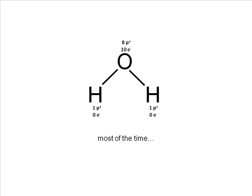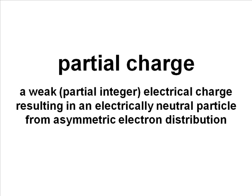These aren't permanent charges, so I say slightly. Oxygen has those electrons most of the time, but there are moments when they are around hydrogen, and in those moments oxygen doesn't have eight protons and ten electrons. The concept of partial charge refers to a weak partial integer electrical charge that results in an electrically neutral particle from asymmetric electron distribution — it's a positive or negative charge, but weaker than a full ionic charge, resulting from electrons spending more time in one location than another.